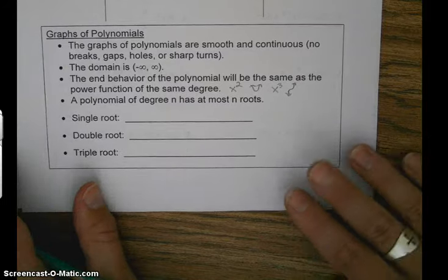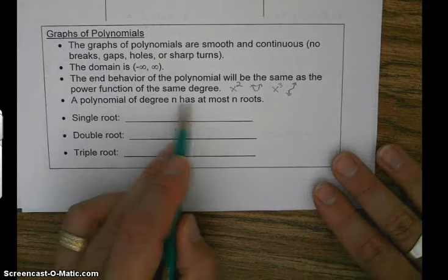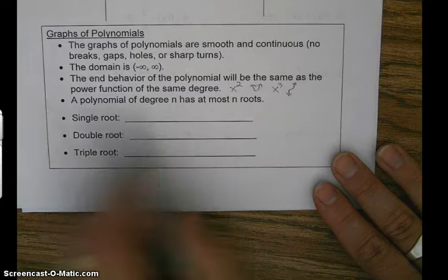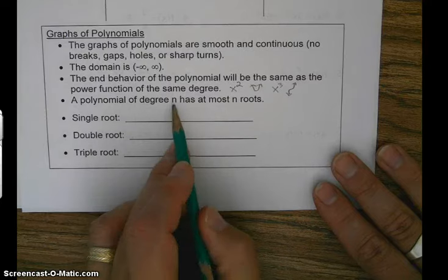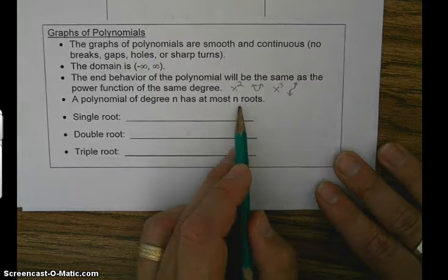Another thing: a polynomial of degree n has at most n roots. So if we have a fifth degree polynomial, we would have five roots.